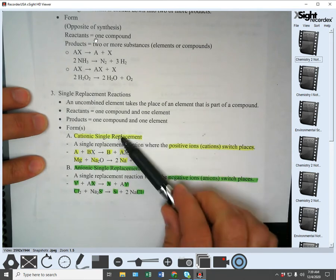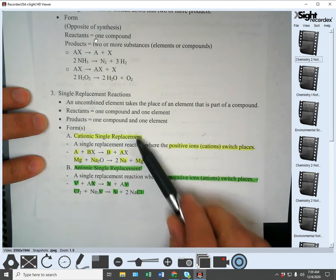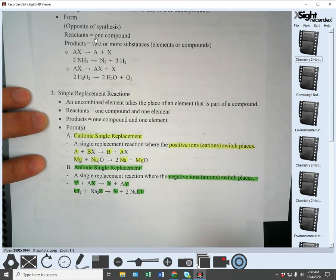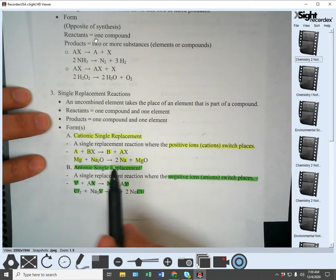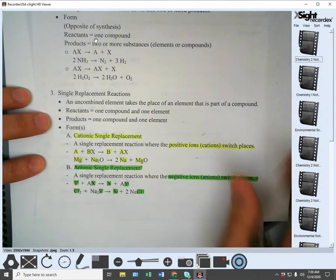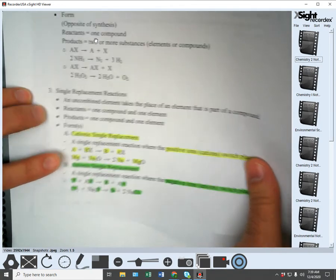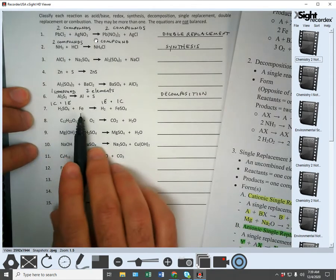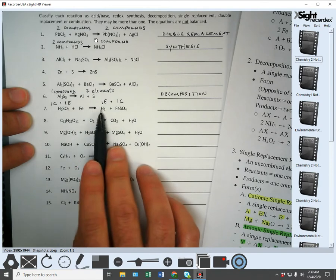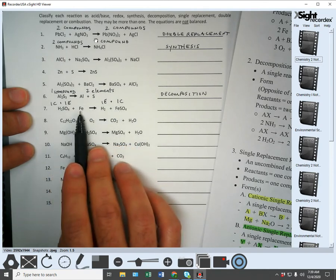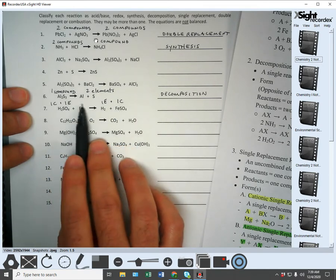Got to be a single replacement. Now we know the single replacement has two types, cationic or anionic. So how do we tell the difference? We look at the single element on the reactant side. We look and see basically what's switching. So what is switching here? The H and the Fe are switching spots, right?